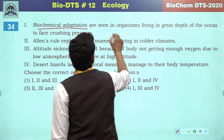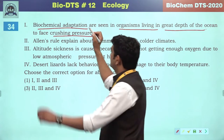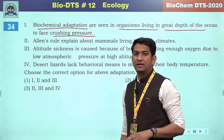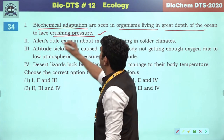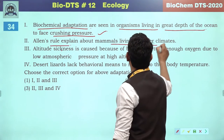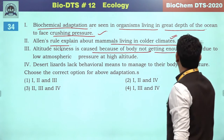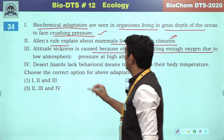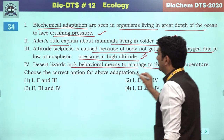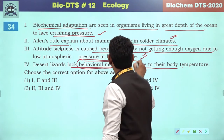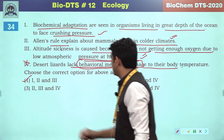Biochemical adaptations are seen in organisms living in great depths of oceans to face crushing pressure — this is a physiological aspect. Allen's rule explains about mammals living in colder climatic zones — correct. Altitude sickness is caused because the body does not get enough oxygen due to low atmospheric pressure at high altitude — correct. Desert lizards lack behavioral means to manage body temperature — this is incorrect, as desert lizards use behavioral means like basking in the sun. So first, second and third are correct references — the first will be the correct answer.